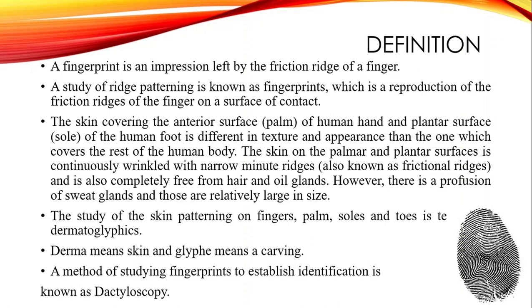The next term is dactyloscopy — a method of studying fingerprints to establish identification. In dactyloscopy, we study the patterns present on a fingerprint, which are made up of friction ridges forming a special kind of pattern.